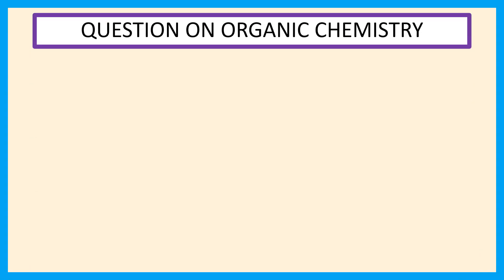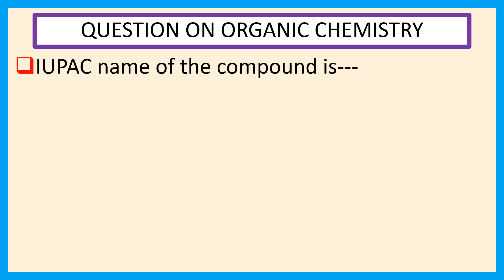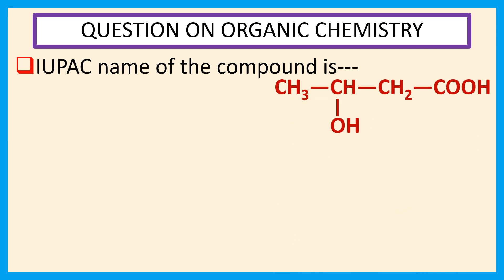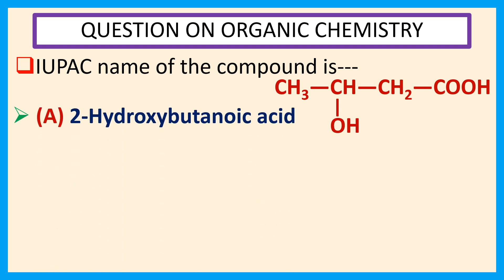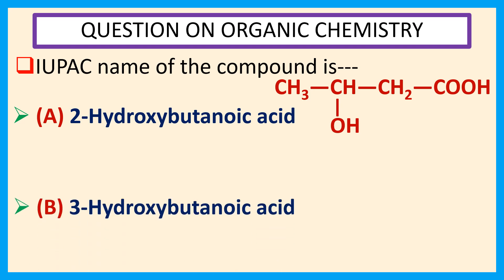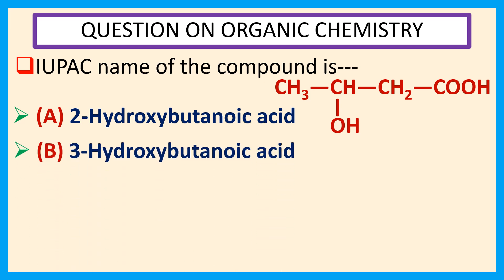Welcome everyone. Question on organic chemistry: the IUPAC name of the compound CH3CHOH CH2COOH. Choices are: a. 2-hydroxybutanoic acid, b. CH-hydroxybutanoic acid.